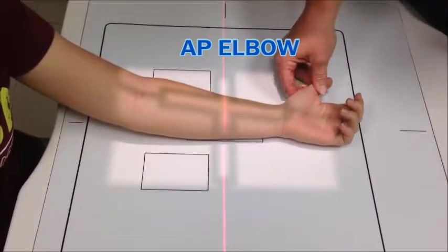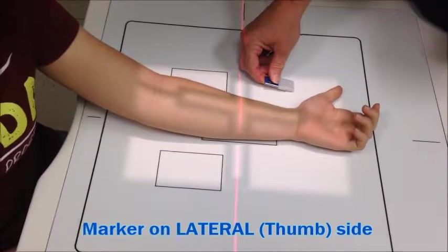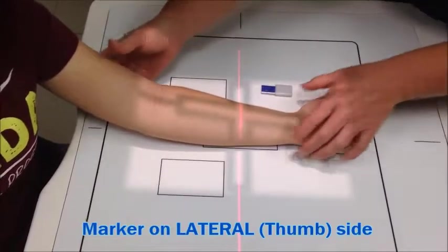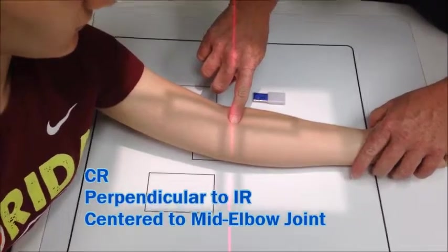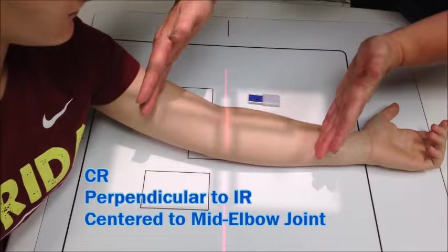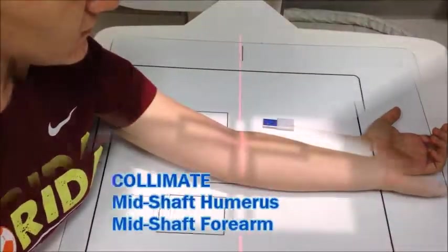You always want to mark on the lateral side. We have the left elbow that we're doing. First is the AP shot. Your central ray is in the joint.